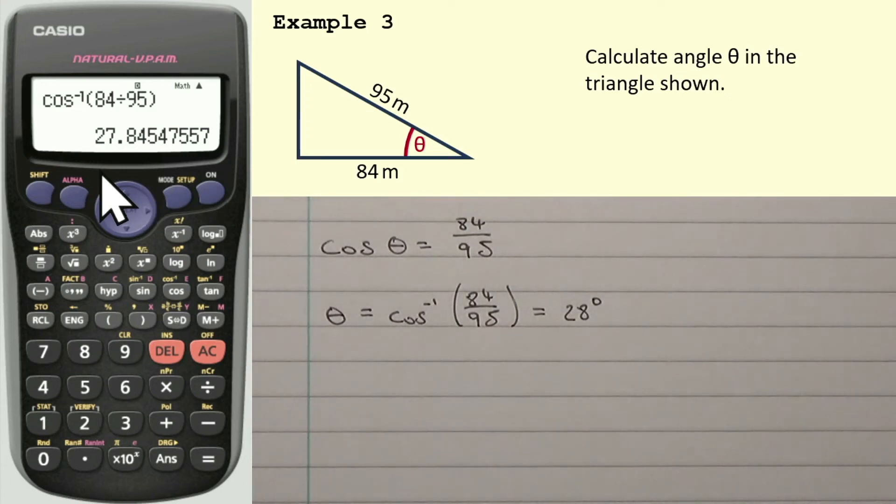One thing I've not mentioned yet, and as I said, I'll go over this at some other point, is expressing angles as bearings. And normally when we're expressing them as bearings, we round to the nearest degree. But as I said, that's something I'll cover in another video.